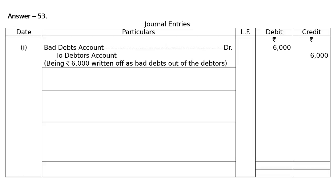The first entry is: Bad Debt account debited to Debtor's account — Rs.6,000 being bad debt written off. There was a balance of debtors and there was a provision, but over and above everything, Rs.6,000 became bad. It is to be written off to Debtor's account. Debtor has a debit balance; if credited, it will be reduced. Bad debt is an expenditure or loss, so it is debited. Bad Debt account Dr to Debtor's account — Rs.6,000 each in debit and credit.